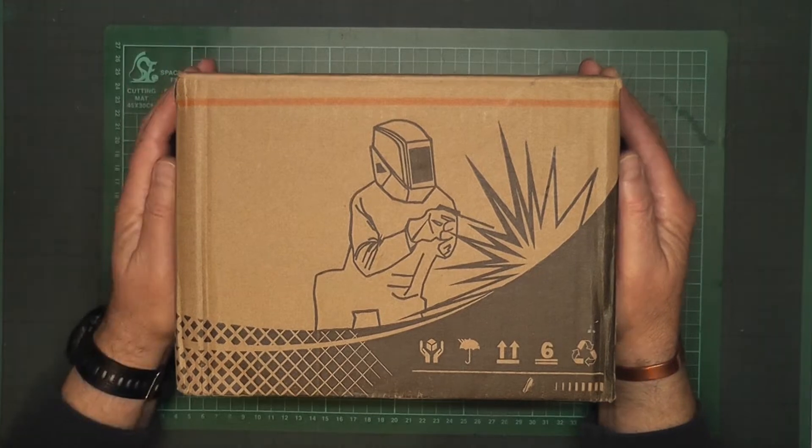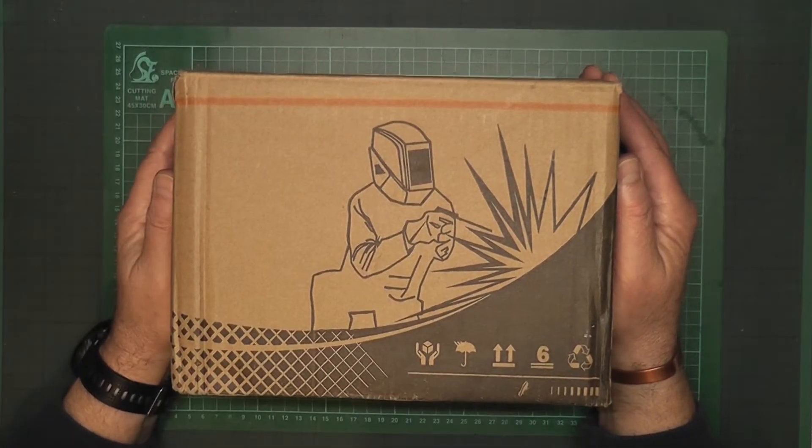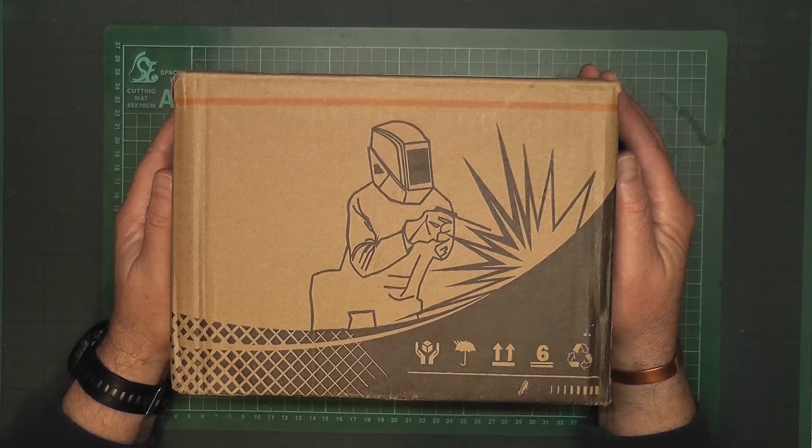It's a ZX7-250. The 250 means it's a 250 amp, and you can see that it's actually quite small. So let's open it up, have a look at it, set it up, and test it.